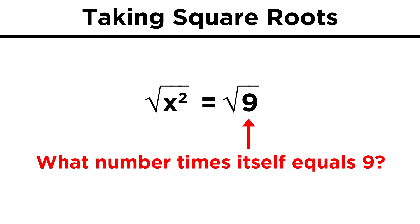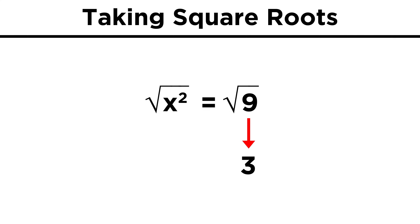So taking the square root of something is like asking what number times itself will give us the number inside the square root. We must point out something very important here. Negative three is also a valid answer for the square root of nine, because negative three times negative three also equals nine.